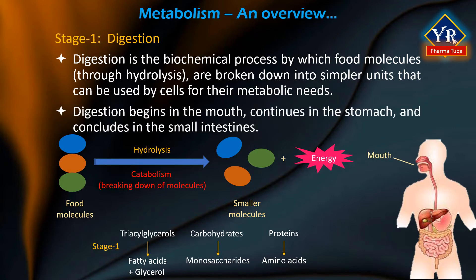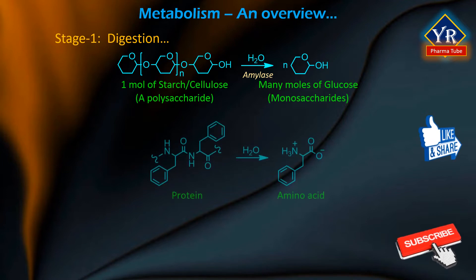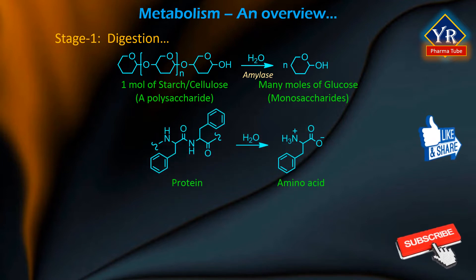Digestion begins in the mouth, continues into the stomach and concludes in the small intestines. The hydrolysis of carbohydrates to monosaccharides begins with amylase enzymes in the saliva and continues in the small intestines. Protein digestion begins in the stomach where acid denatures the protein and the protease pepsin begins to cleave the protein backbone into smaller polypeptides and amino acids. Digestion continues in the small intestines where trypsin and chymotrypsin further cleave the protein backbone to form amino acids.